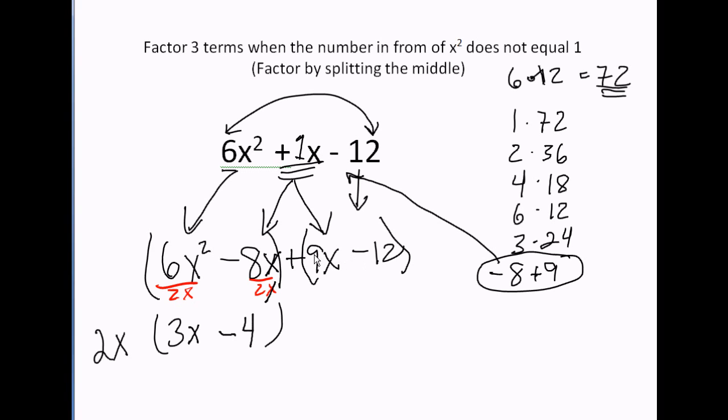On this side, the greatest common factor, what can divide into 9 and 12? The largest number is 3. The lowest power x, I have an x and no x. So no x comes out. I divide each of these terms by what's outside the parentheses. There's only a 3 outside. 9 divided by 3 is 3 with an x in it. 12 divided by 3 is a negative 4.